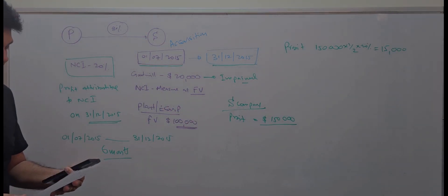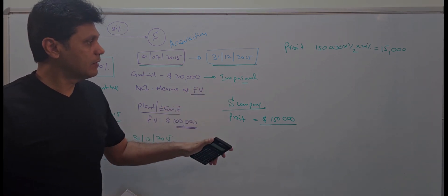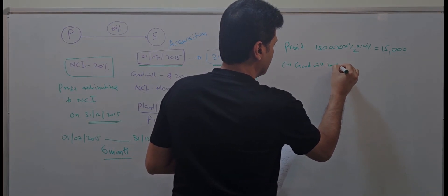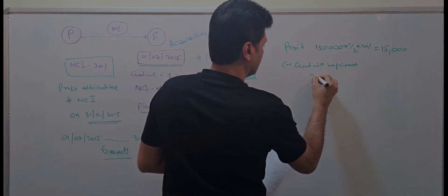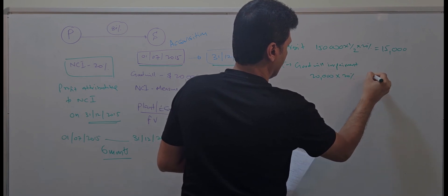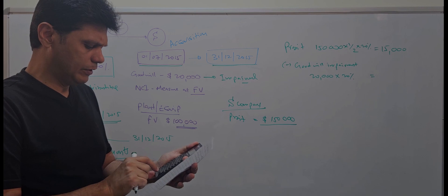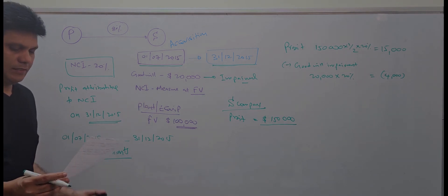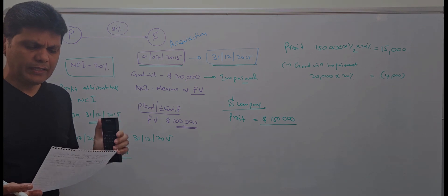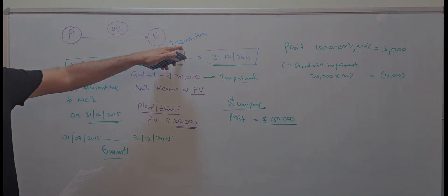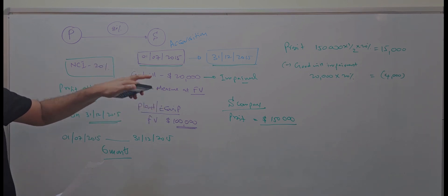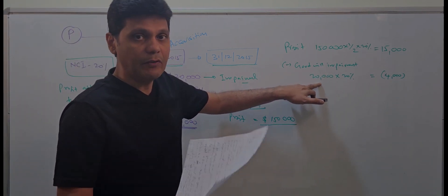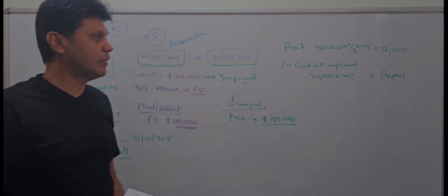From this 15,000 profit we need to make two adjustments. First, less goodwill impairment: since the NCI was measured at fair value, we allocate the goodwill impairment to NCI, which is 20,000 times 20% equals 4,000. This adjustment is required because goodwill was calculated on a fair value basis and is now fully impaired.